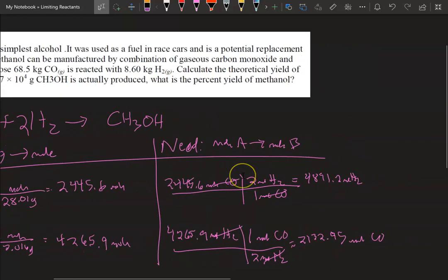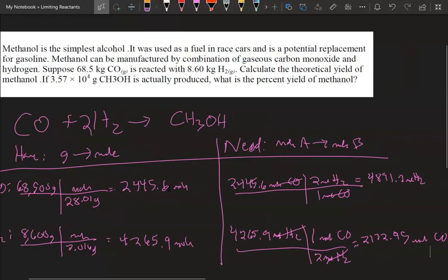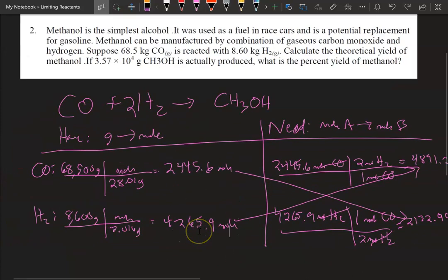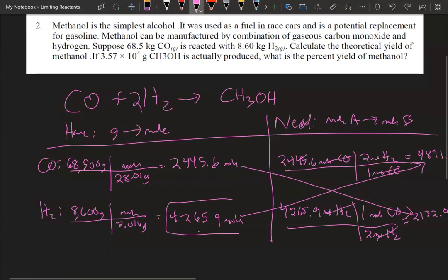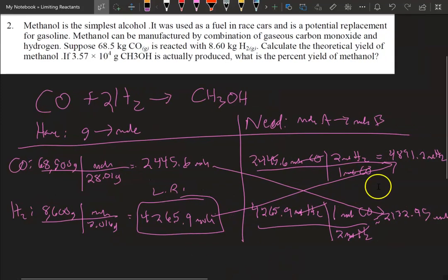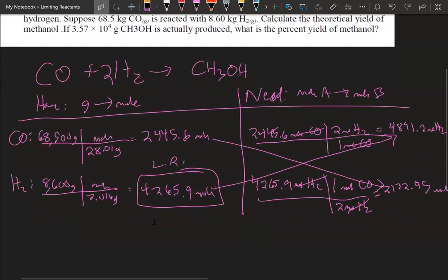So now we're going to compare the CO which is here. We're going to compare this. So we have 2,445.6, we need 2,132, so we have plenty of CO. Now looking at the hydrogen, we have 4,265.9, we need 4,891.2. So right off the bat our limiting reagent is this because we don't have enough of it. We need close to 5,000, we only have close to 4,000. So we're off by about 600 moles. So therefore that's your limiting reagent.